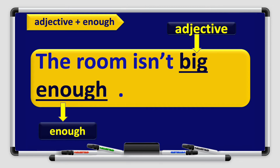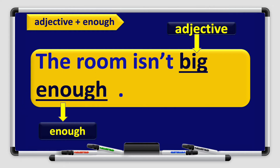We have here the adjective plus 'enough.' Let's see this example together: The room isn't big enough. 'The room' is the subject, 'isn't' is the verb in negative form, 'big' is the adjective, and 'enough' is the word. The word 'enough' here tells us that this room is not big enough for 30 students, but it's enough for 20 students.